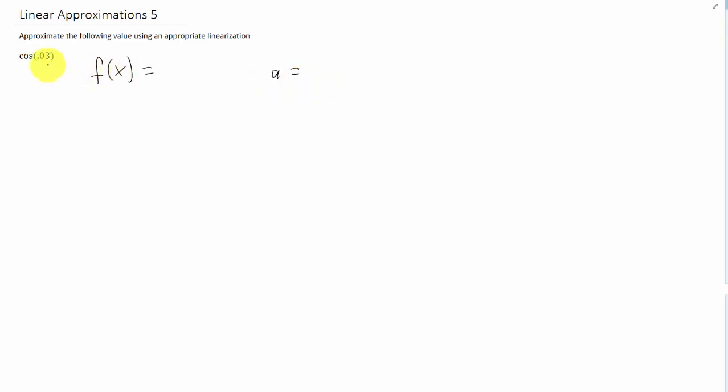Well, the a value that's appropriate is a value of x that is close to the one given inside this function. In this case, it looks like a equals 0 is going to be an appropriate a value, and the function given is just cosine of x.